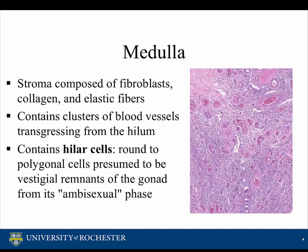The medulla of the ovary has a stroma composed of fibroblasts, collagen, and elastic fibers. It also contains clusters of blood vessels transgressing from the hilum. The medulla also consists of hilus cells, which are round to polygonal cells presumed to be vestigial remnants of the gonad from its ambisexual phase.